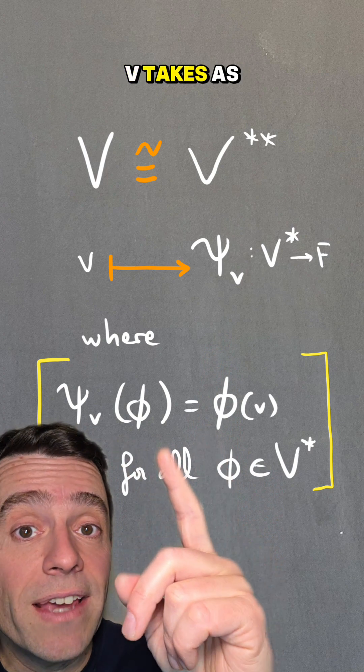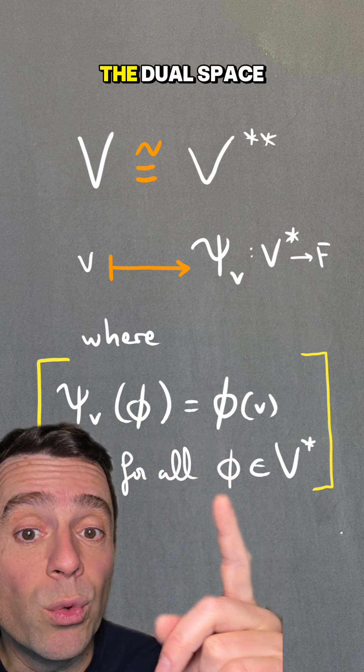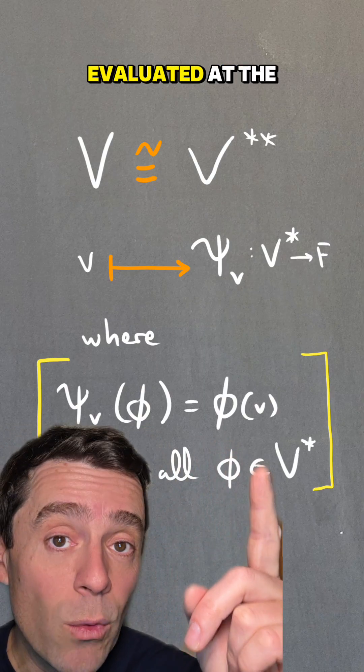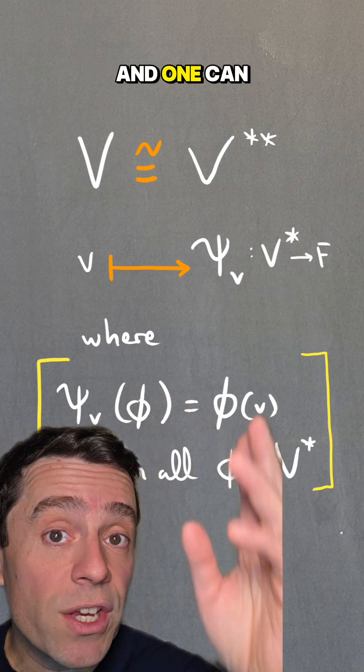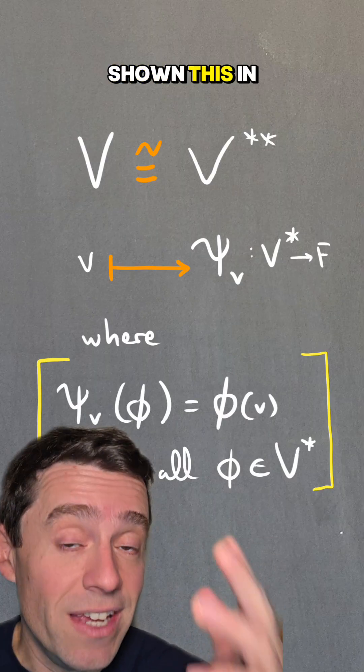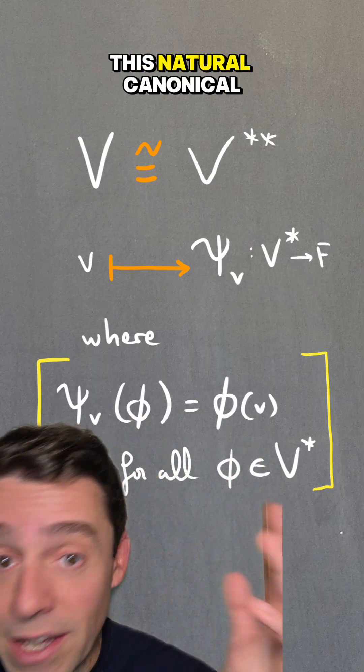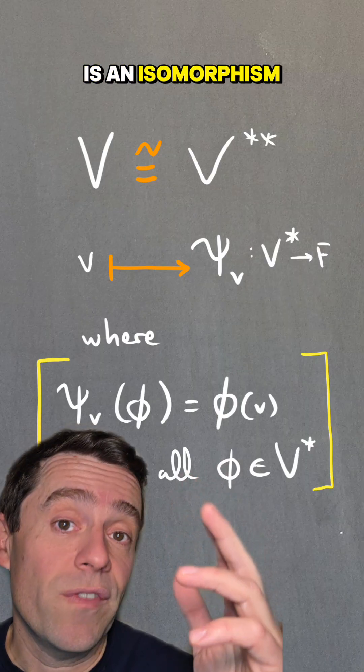Well, ψ of V takes as input elements of the dual space and sends an element of the dual space to that element evaluated at the vector V. And one can show, and I have shown this in some of my videos, that this natural canonical map is an isomorphism.